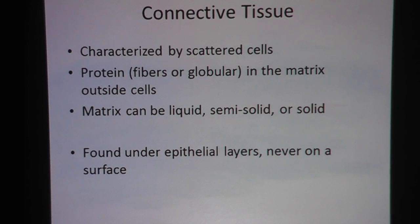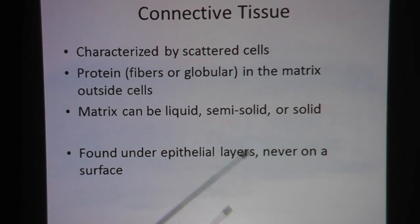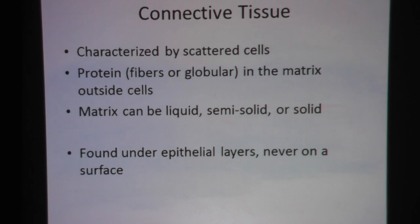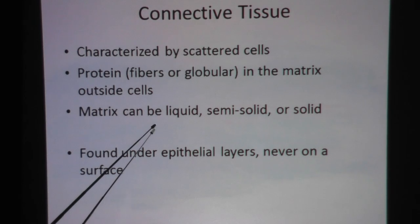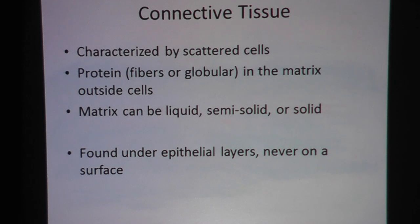Connective tissue is characterized by scattered cells, and because the cells are scattered, there are spaces in between them. The spaces in between them is called matrix — that's the space outside the cell. Sometimes we will see proteins in connective tissue. Sometimes the matrix can be liquid, semi-solid, or solid. In the case of fibrocartilage, the matrix would be semi-solid. Keep in mind that connective tissue is never found on the surface, because if it is, then it would be called epithelial tissue.